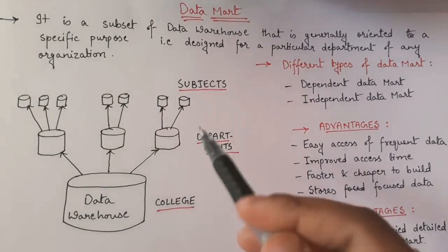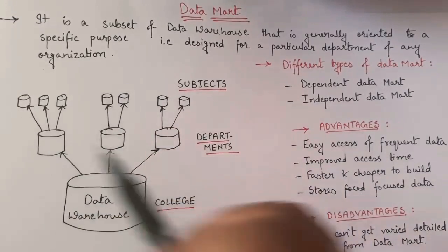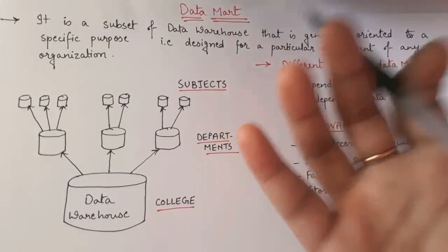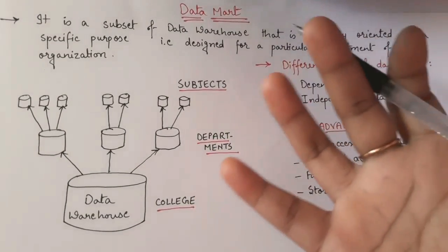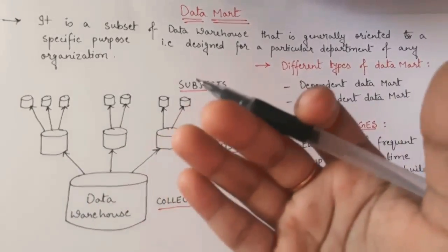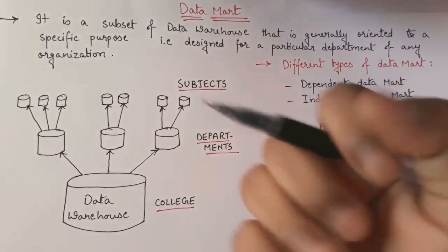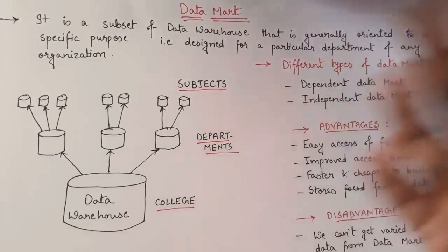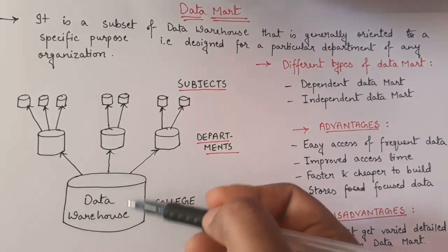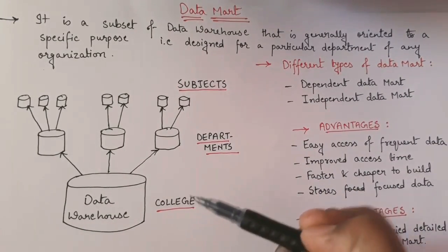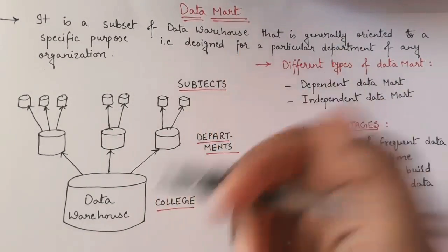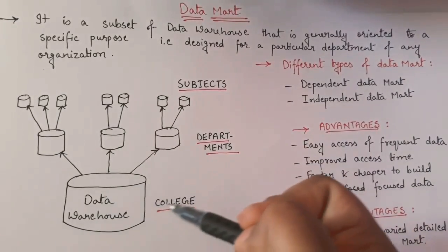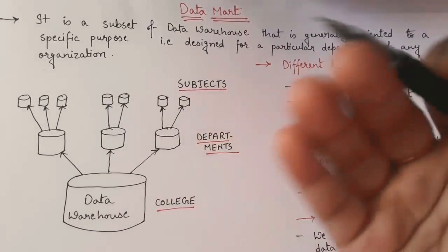Now let's see this example — you will have a clear idea. Consider that this is my data warehouse and all the items above that you are seeing are nothing but data marts. The data warehouse, as we have already seen in earlier videos, is a bulk of data. Here we are considering one data warehouse of the college — it is the data warehouse of the college, which will contain various types of data.